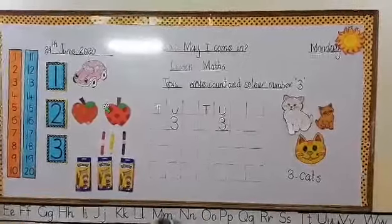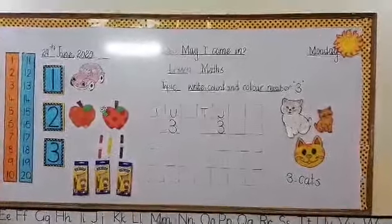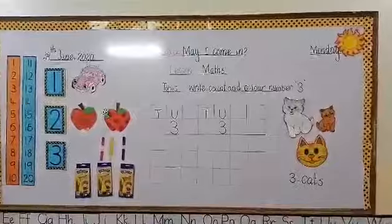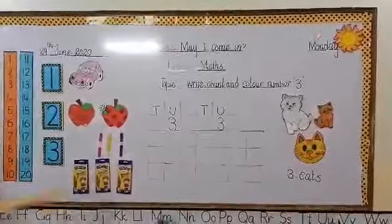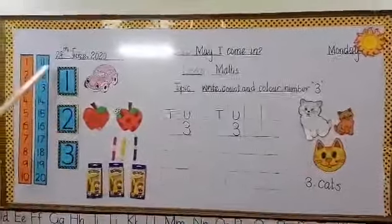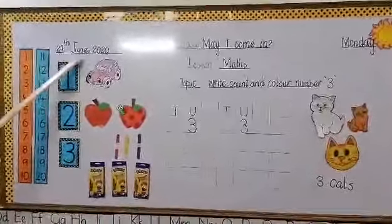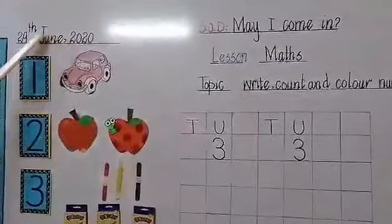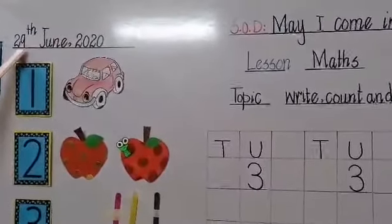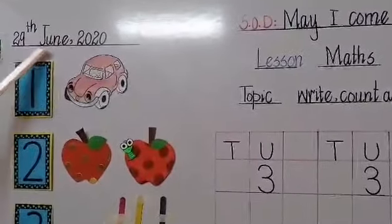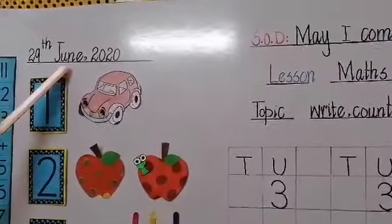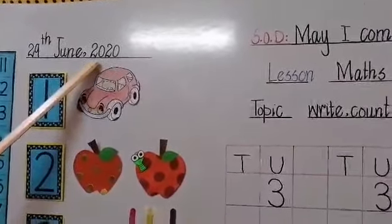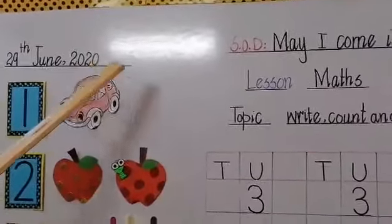As family students, this is our number lesson time and today the date is 29th June 2020. What is the day today? 29th. And which month is this? June. Which year is this? 2020.